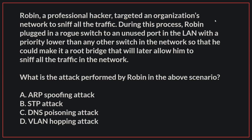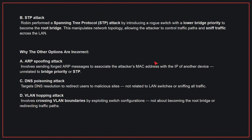Robin, a professional hacker, targeted an organization's network to sniff all the traffic. During this process, Robin plugged in a rogue switch to an unused port in the LAN with a priority lower than any other switch in the network so that he could make it a root bridge that will later allow him to sniff all the traffic in the network. What is the attack performed by Robin in the above scenario?